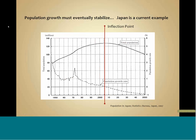Two things create economic growth: one is population growth and the other is productivity improvement. Eventually, population will stabilize — it's already happening in some places in Europe and Japan. This particular chart shows that Japan has already crossed that inflection point — you can see the dotted line is the growth rate and it's gone below zero. You actually have a shrinking population. And that's also a problem in some places. Maine is one of two states in the United States that has a shrinking population.